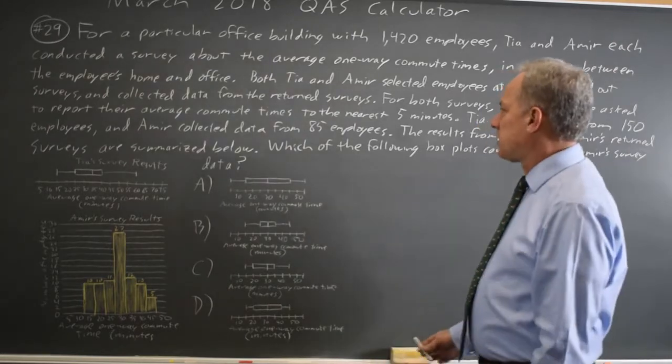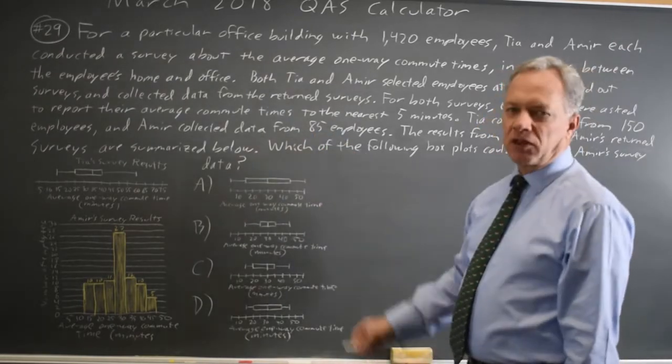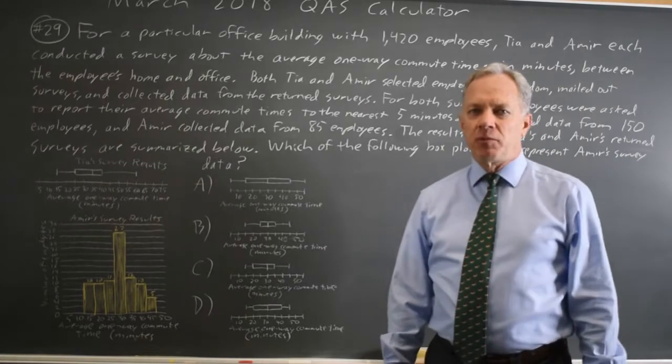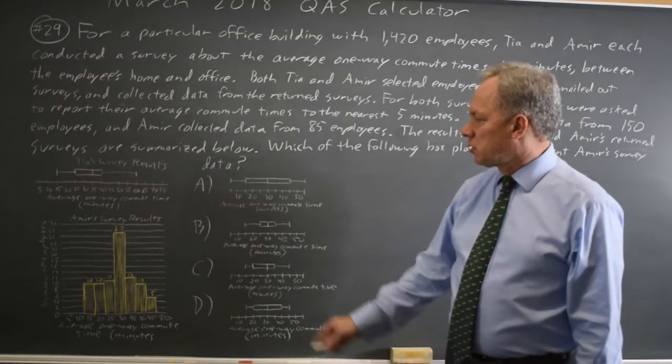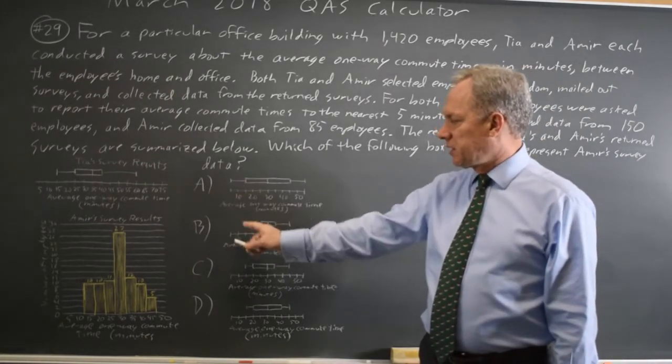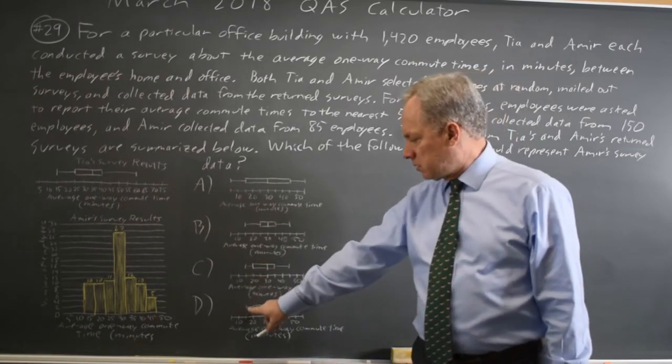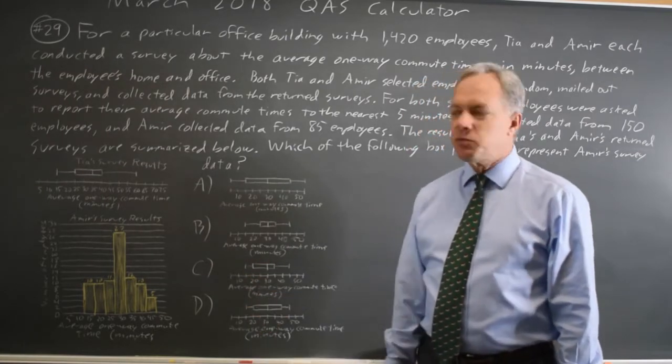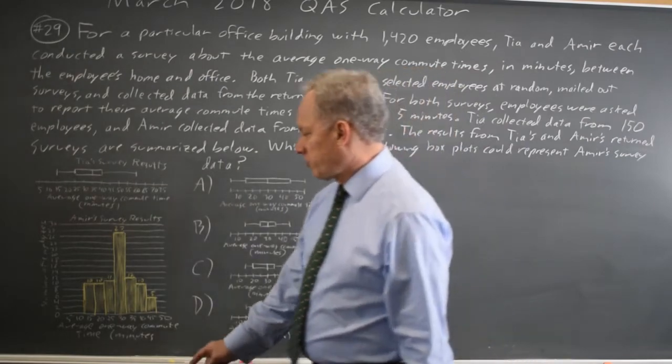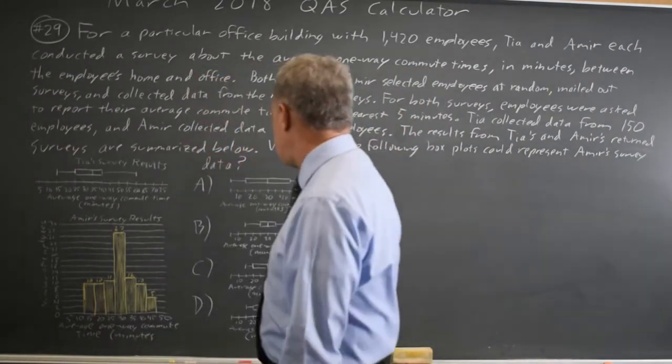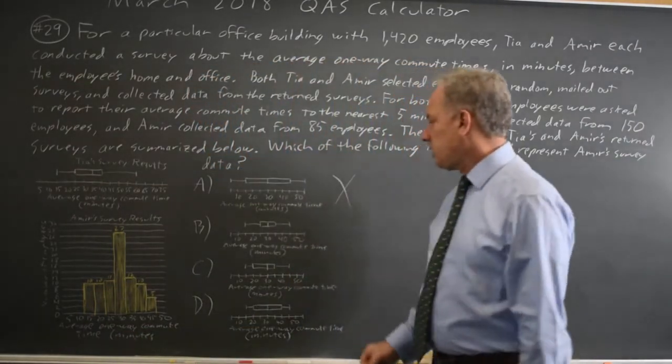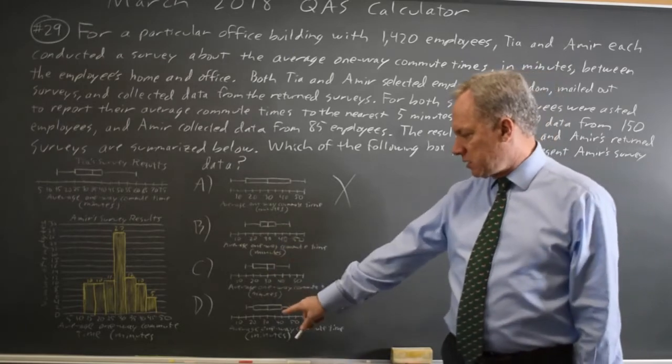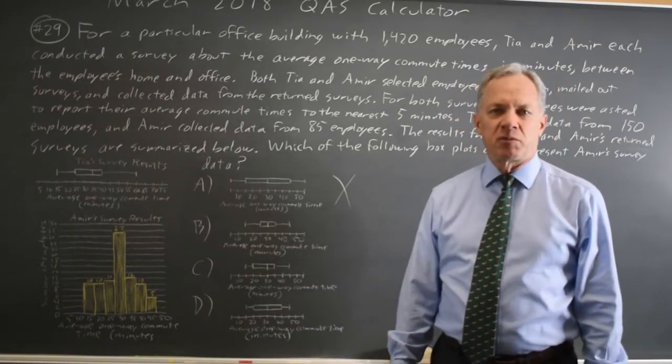Amir's data includes 85 employees. In a box plot, the vertical line at the end of the skinny line is the minimum value, and the minimum value for Amir's data is 15, which rules out choice A. B, C, and D all have a box plot with a minimum of 15.